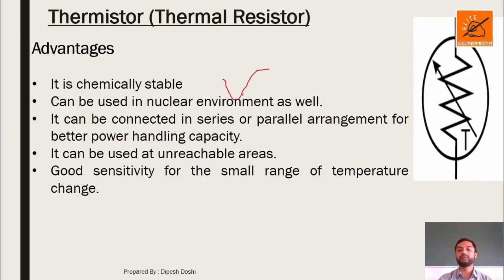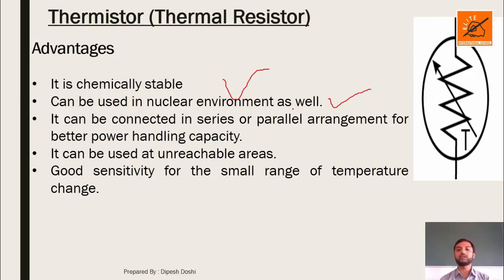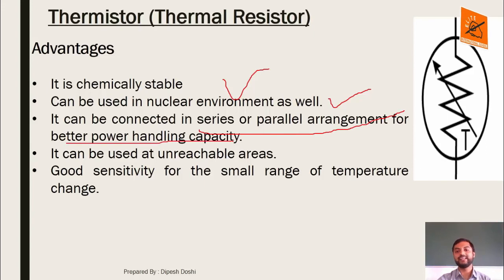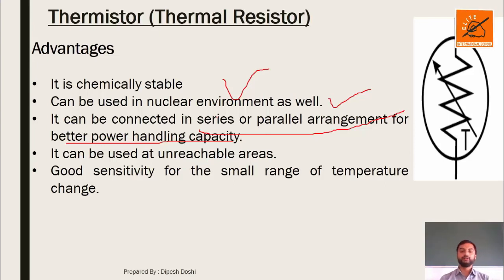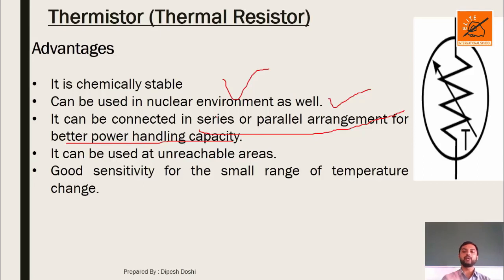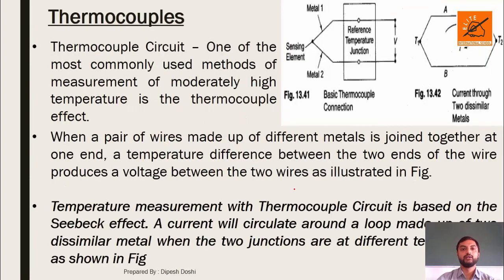Advantages of thermistor: it is chemically stable with no effect of chemicals. It can be used in nuclear environments to measure reactor temperature. It can be connected in series or parallel arrangements for better power handling capacity. It can be used at unreachable areas — for example, inside a reactor during working conditions. It has good sensitivity for small ranges of temperature change.